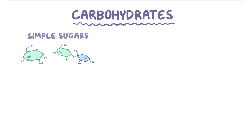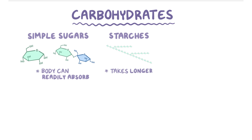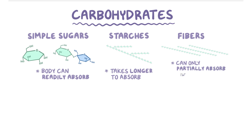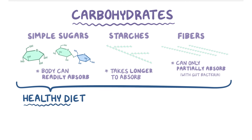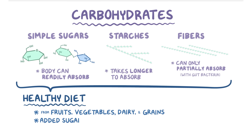As a quick recap: there are various types of carbohydrates. Simple sugars are monosaccharides and disaccharides that the body can readily absorb. Starches are polysaccharides that take longer to absorb. Fibers are polysaccharides that the body can only partially absorb with the help of gut bacteria. Ultimately, a healthy diet includes all types of carbohydrates coming from a variety of sources like fruits, vegetables, dairy, and grains. It can include added sugars too, with the World Health Organization and the US Dietary Guidelines recommending that added sugars make up less than 10% of your overall calories.